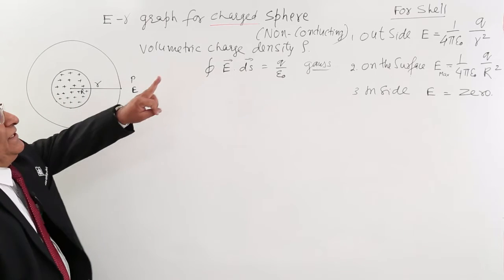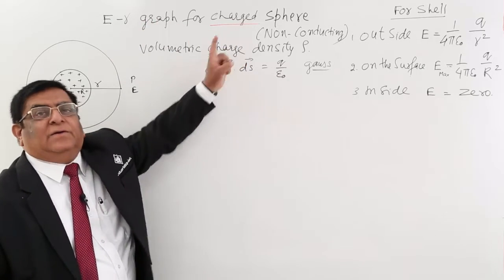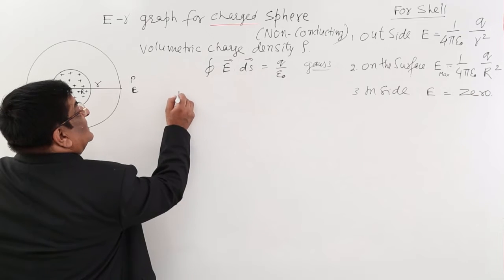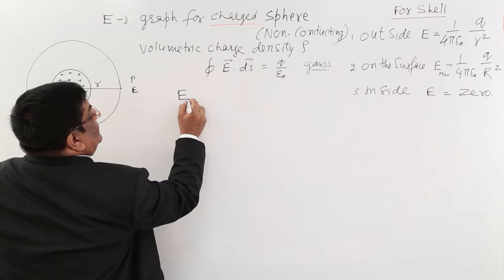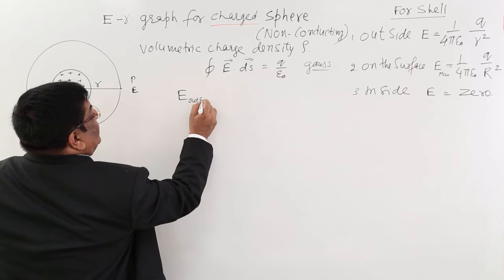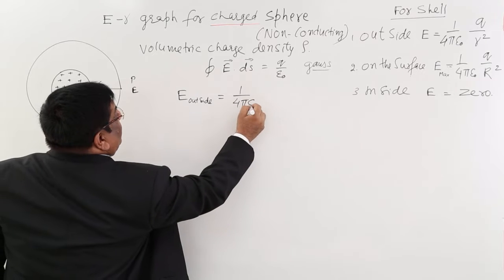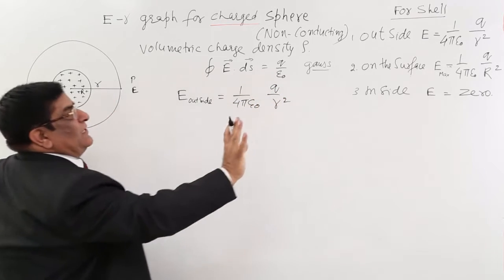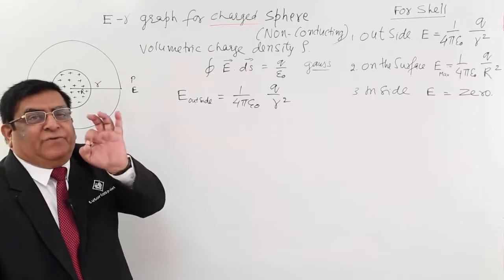So here we have already done the complete thing. You can see that lecture once again. E outside at any point which is outside is equal to 1 upon 4 pi epsilon 0 Q upon R square. No change, no different derivation. Same derivation, every word is same.